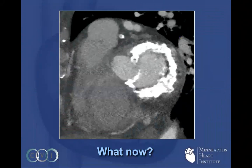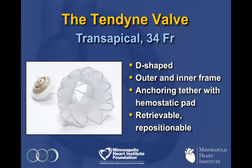This invasiveness of the myocardium makes it very difficult to treat surgically, because whenever these patients are treated with debridement there's a very high risk of AV groove disruption. So the way this was treated was through compassionate use approval of the Tendine valve. This is a prosthesis placed transapically — it's anatomically shaped, has an outer and inner frame, an anchoring tether with a hemostatic pad that helps hold it in place, and importantly the device is completely retrievable and repositionable.